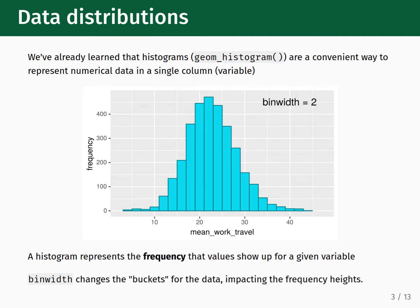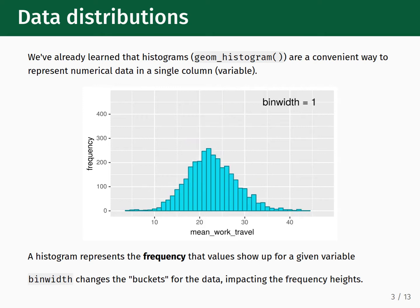Changing the bin width will directly impact the number of data points that fall within each bucket. Right now, the histogram shown here was plotted using a bin width equal to 2. If we reduce the bin width from 2 to 1, we see that the number of buckets for our data doubles, and the bar heights reduce by approximately a factor of 2.